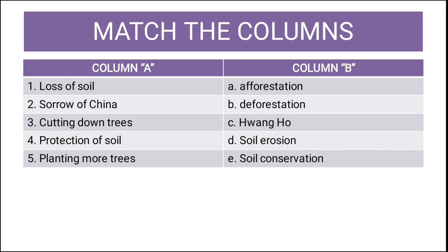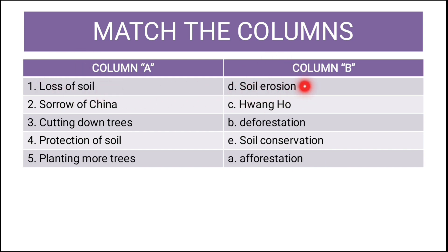Now let us see match the columns. Column A has: cutting down trees, protection of soil, and planting more trees. Column B has: afforestation, deforestation, Wangvu, soil erosion, and soil conservation. The answers: loss of soil matches with soil erosion; sorrow of China matches with Wangvu; cutting down trees matches with deforestation; protection of soil matches with soil conservation; planting more trees matches with afforestation.